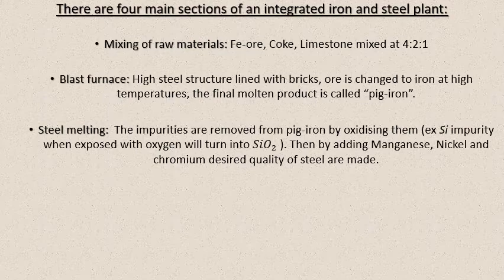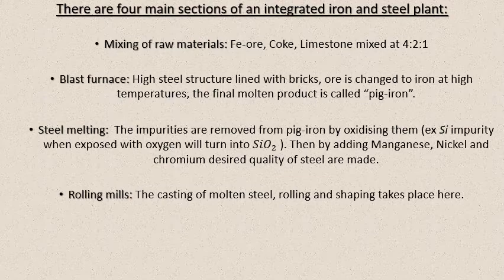Then you add manganese, nickel, or chromium depending on the desired steel quality. If you add manganese you get mild steel; if you add chromium you get stainless steel; if you add nickel you get another variety. Mild steel is the most abundantly made and is used for automobiles, trains, railings, and most large-scale industries. The last phase is rolling mills — the molten steel is cast, shaped, rolled, and made into sheets or any other desired form.